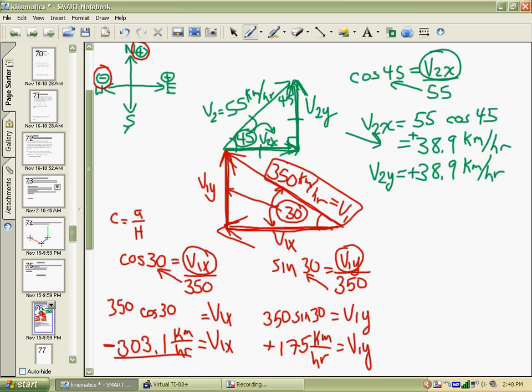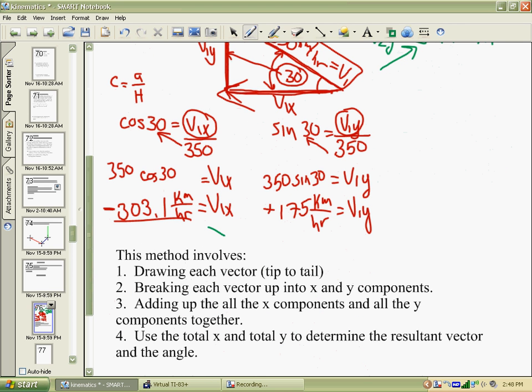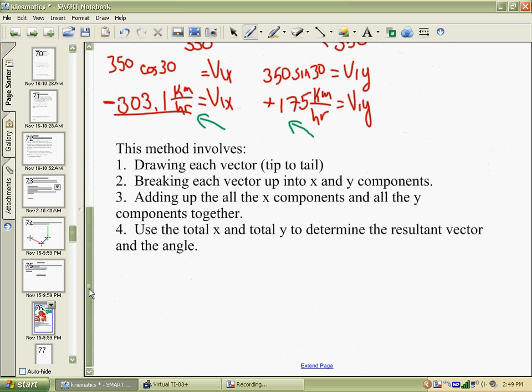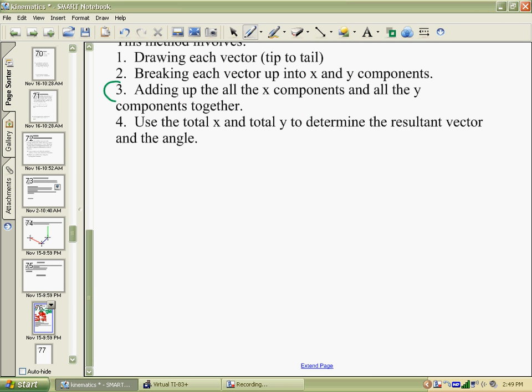We have a positive 38 for V2x and V2y. For V1x and Y, we had its components down here. So we're currently at step three where we're going to add up all the x components and all the y components together.